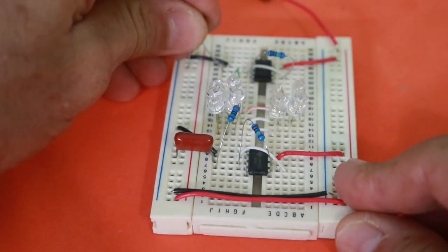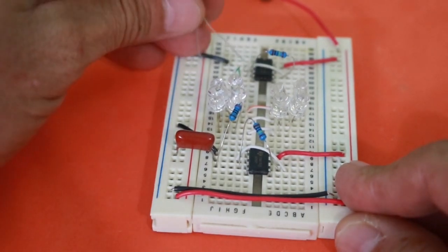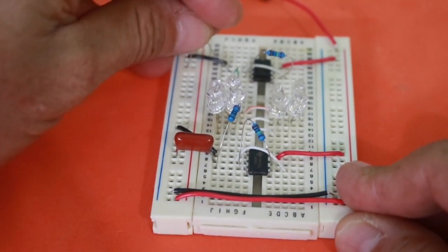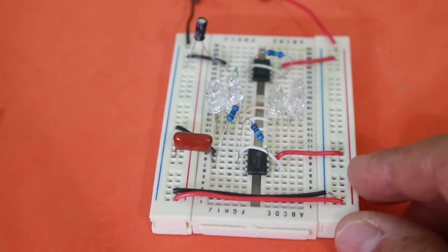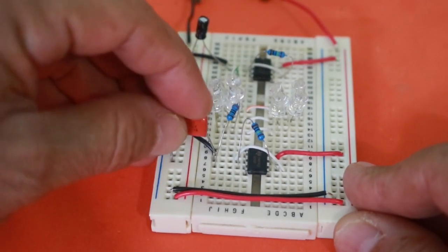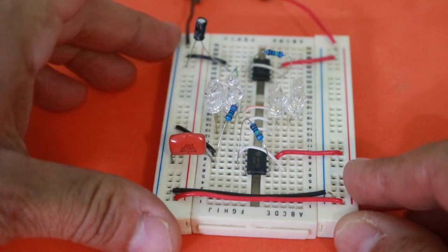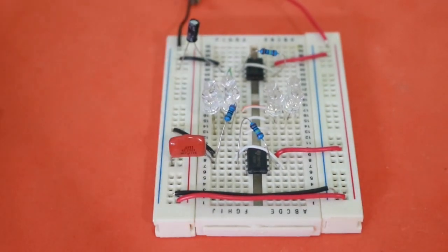This one which is 3.3 nanofarads I'm going to change with one microfarad capacitor, and the other one, 0.1 microfarads, I will change it for 0.033 microfarads. Let's see the difference.